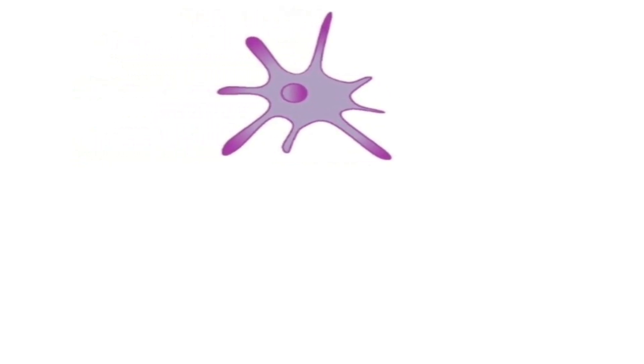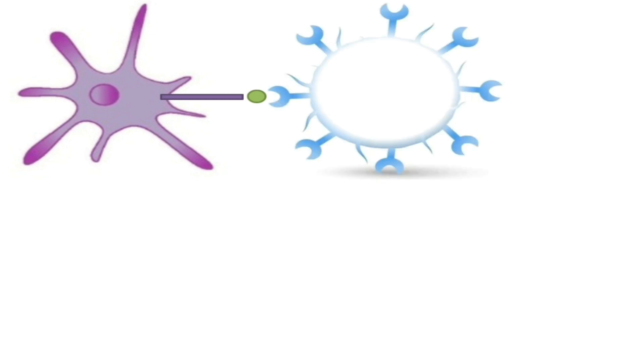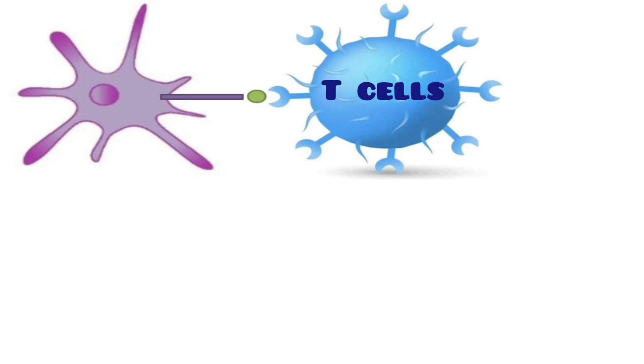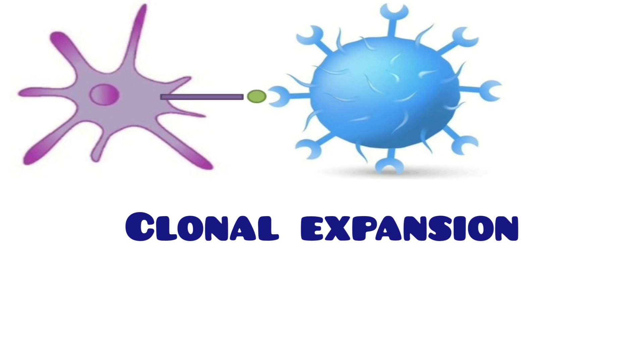Here is the antigen presentation process: once dendritic cells encounter a pathogen, they perform phagocytosis, then break the pathogen apart and present a fragment on their surface to other cells that cannot identify the whole pathogen on their own — they can only recognize it when its antigen is presented. These cells that need antigen presentation are T cells.